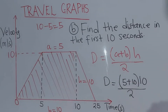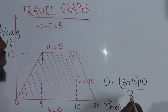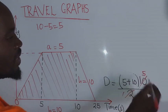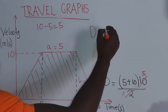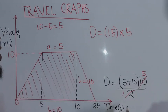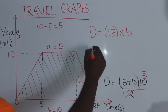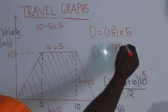Now we substitute: distance equals (5 plus 10) over 2, times 10. Simplify: 2 into 10 gives 5. Distance equals (5 plus 10) times 5, which equals 15 times 5. Distance equals 75 meters. That is the answer for distance.